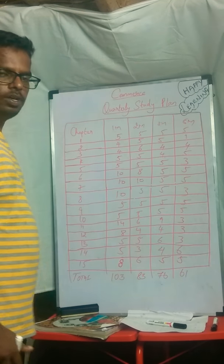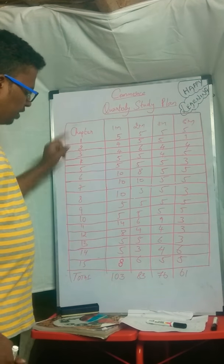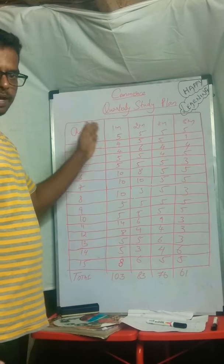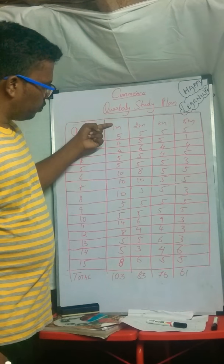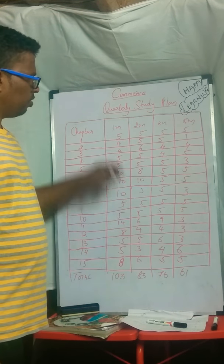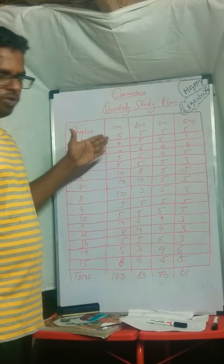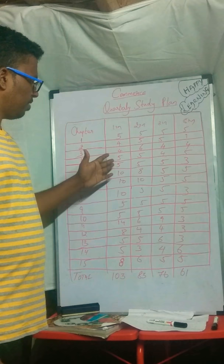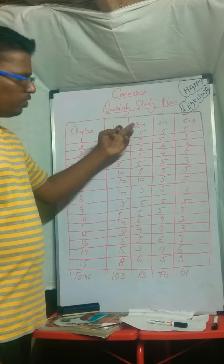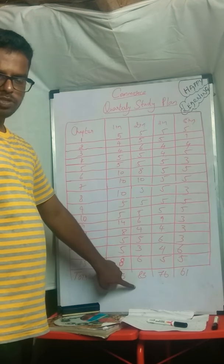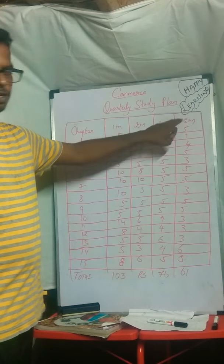If you break up the syllabus from chapter 1 to chapter 15, the bookback questions are plotted as one mark, two mark, three marks, and five marks. For one mark, the first chapter has one or three questions, second chapter has four, third chapter four, fourth chapter five, and fifth chapter five. For two marks, the total number of questions is 83, for three marks it is 76, and for five marks it is 61.